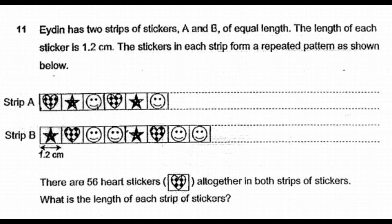Hello kids, let's look at a question from SA1 Henry Park Primary School 2019 paper. This is question number 11. Eydin has two strips of stickers, A and B, of equal length. The length of each sticker is 1.2 centimeters. The stickers in each strip form a repeated pattern as shown below.